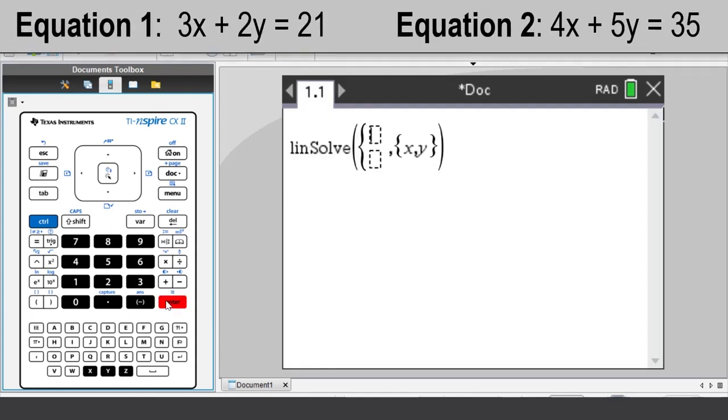Enter the first equation: 3X plus 2Y equals 21.